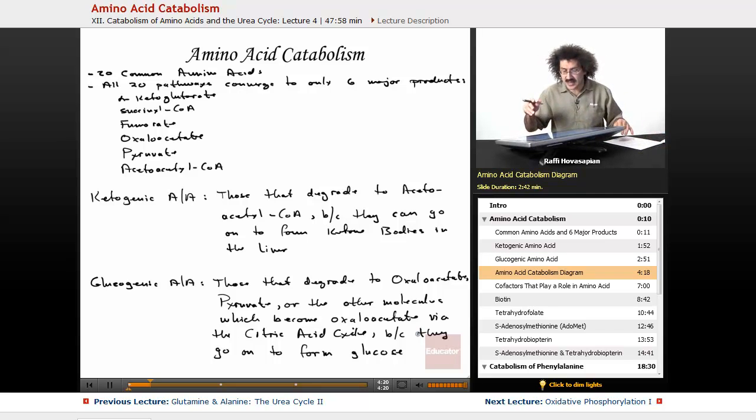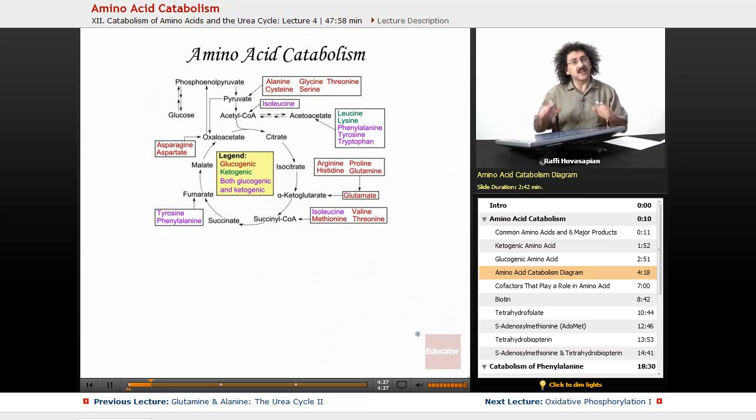Let's take a look at a diagram of amino acid catabolism. The amino acids are listed around here, and this is the citric acid cycle. Here is oxaloacetate, citrate, isocitrate, alpha-ketoglutarate, succinyl-CoA. The amino acids in red are the glucogenic amino acids. Arginine, proline, histidine, glutamine break down into this, which ultimately goes to oxaloacetate. Oxaloacetate can follow this path to become glucose, glucogenic.